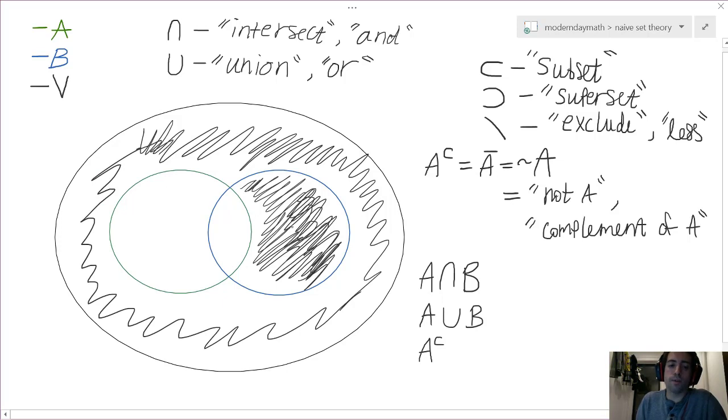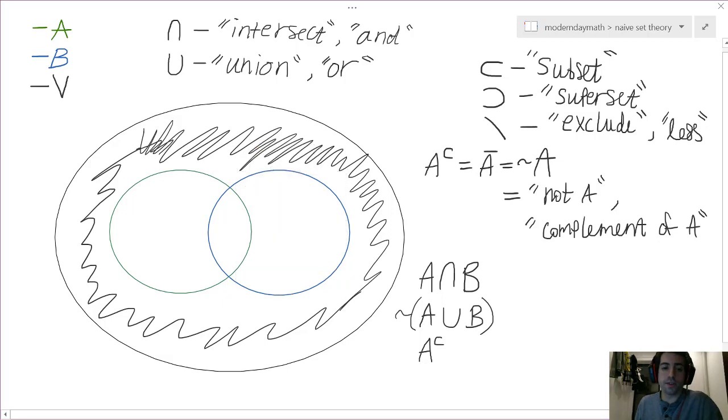Alright, obviously, I can shade this in more, but this gets the idea across. And, of course, if we want to deal with B complement, well, we just get rid of the scribbling in this section of B and just move it over to A. And then we can even complement a union and then we're just dealing with all of these elements that are outside both of these sets.